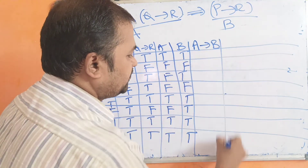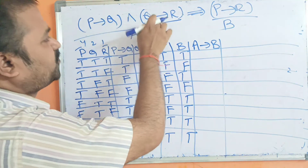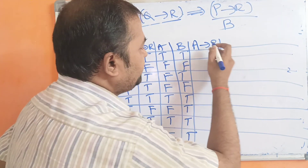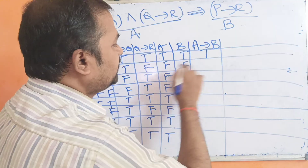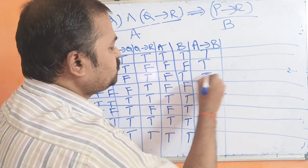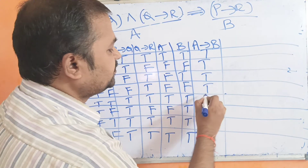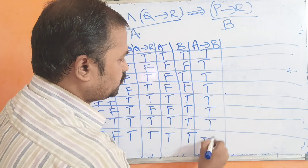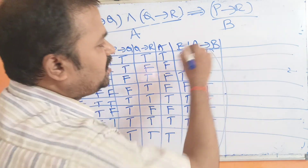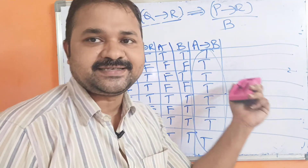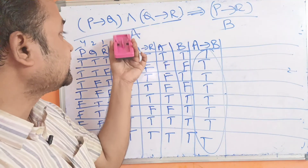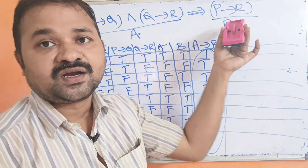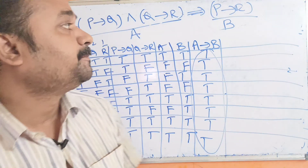Now we compute A→B, i.e., ((P→Q)∧(Q→R))→(P→R). The results are: T→T=T, F→F=T, F→T=T, F→F=T, T→T=T, F→T=T, T→T=T, T→T=T. The final column contains all true values, so this is a tautology. Therefore (P→Q) ∧ (Q→R) is tautologically implied to P→R.